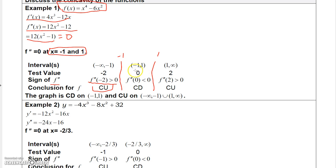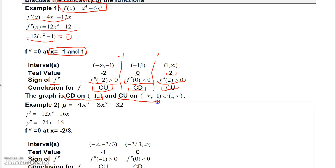Between -1 and 1, I test x = 0. Plugging 0 into the second derivative gives 12 times -1, which is negative. So the graph is concave down on that interval. For the interval from 1 to infinity, I test x = 2, which gives a positive second derivative, so the graph is concave up there. Summarizing: concave down on (-1, 1), concave up on (-∞, -1) and (1, ∞).